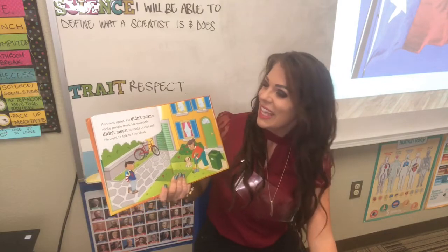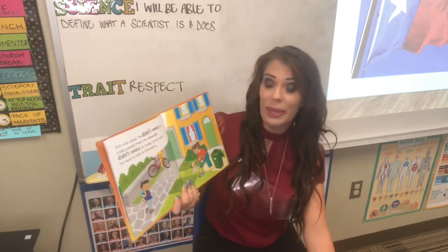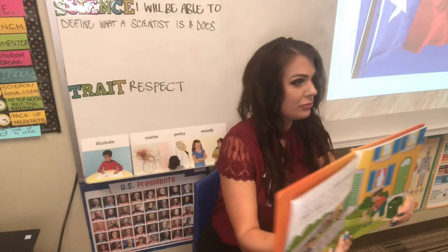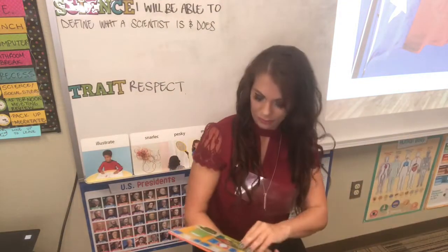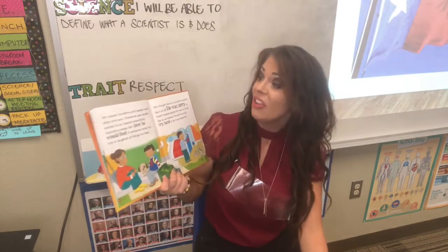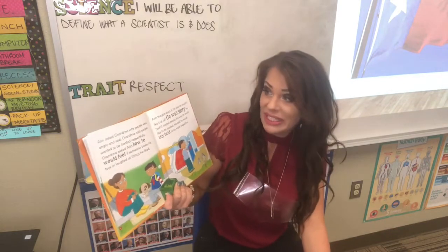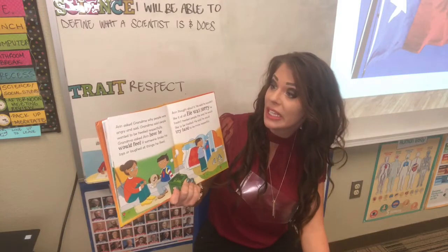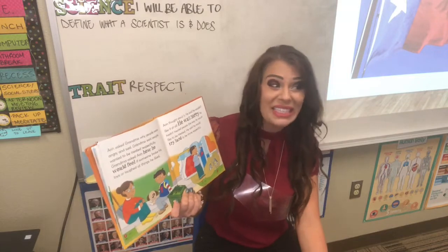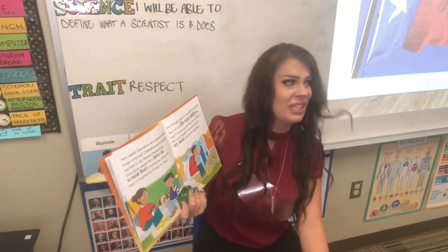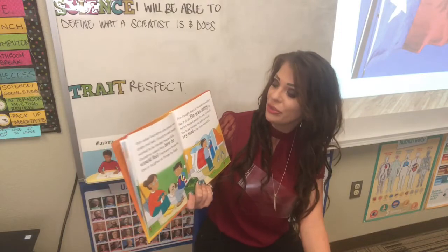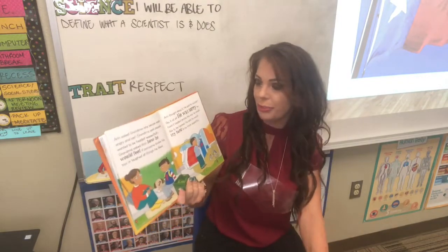Aaron was upset — he didn't mean to make people mad. He especially didn't mean to make Junior sad. He went to talk to Grandma. Aaron asked Grandma why people were angry and sad. Grandma said people wanted to be treated respectfully. Grandma asked Aaron how he would feel if someone broke his toys or laughed at the things he liked. Aaron thought about it and said he wouldn't like it at all.